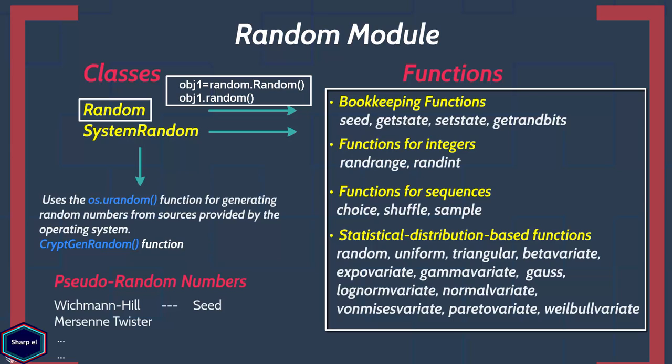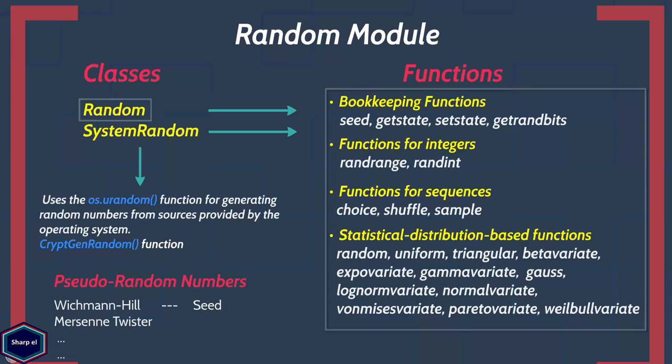I will cover threads in one of my next tutorials. So in this tutorial I will not create any instance of class random, because as I mentioned before, all these functions are bound methods of one hidden global instance of class random.